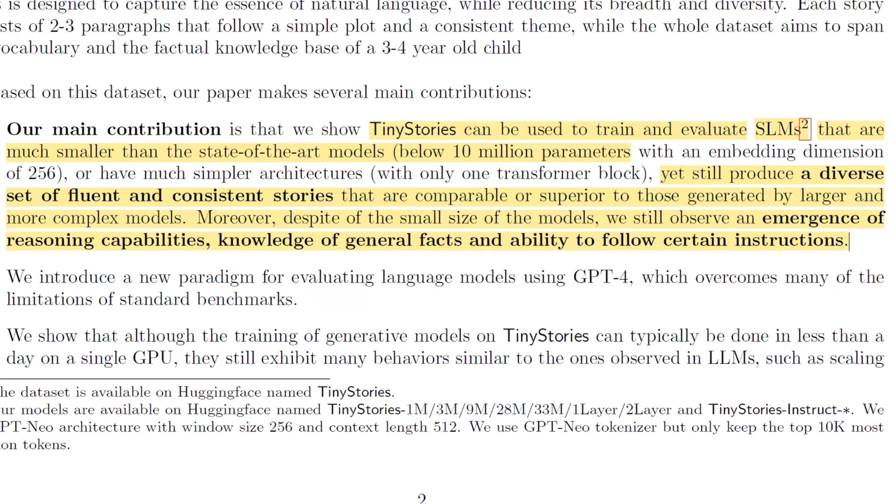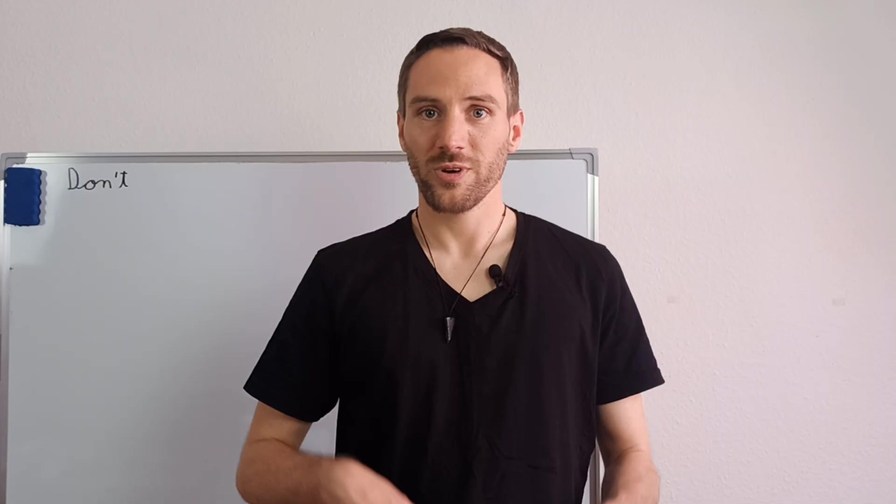Tiny stories, however, can be used to train and evaluate SLMs that are much smaller than state-of-the-art models below 10 million parameters, yet still produce a diverse set of fluent and consistent stories that are comparable or superior to those generated by larger and more complex models. Moreover, despite the small size of the models, we still observe an emergence of reasoning capabilities, knowledge of general facts, and ability to follow certain instructions, which is insane.